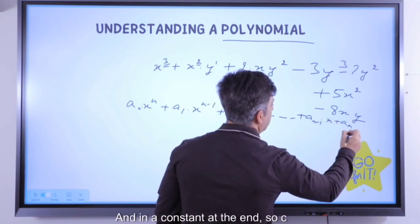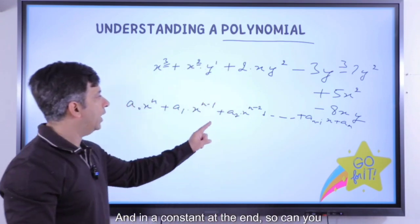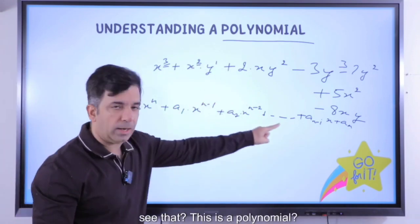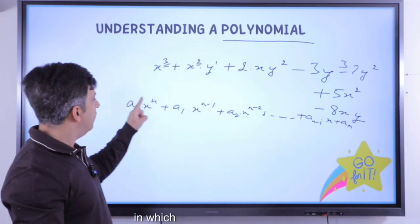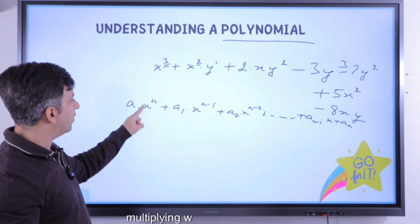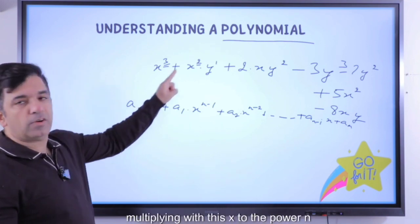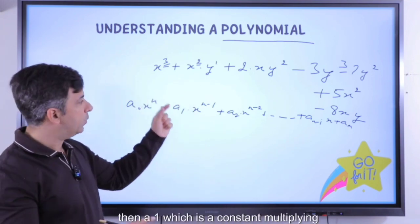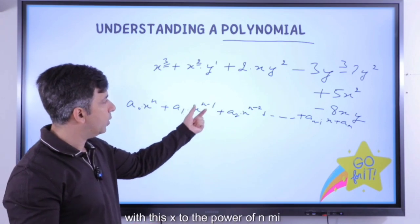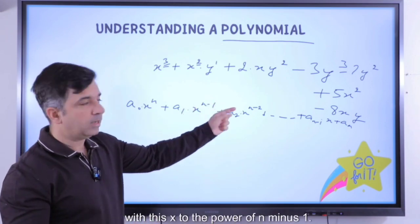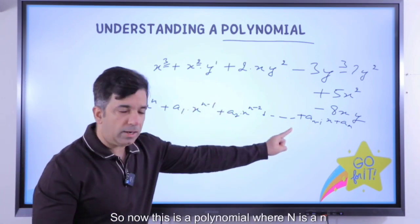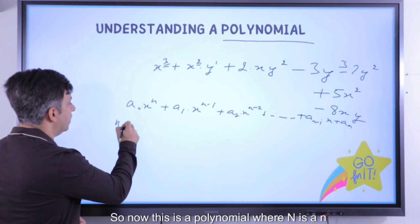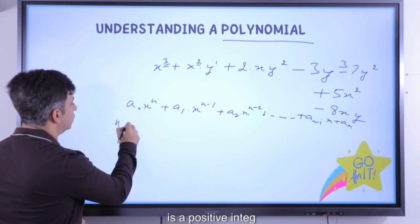In this general polynomial, the first term is a₀ multiplied by xⁿ, then a₁ multiplied by x^(n−1), and so on. This is a polynomial where n is a positive integer.